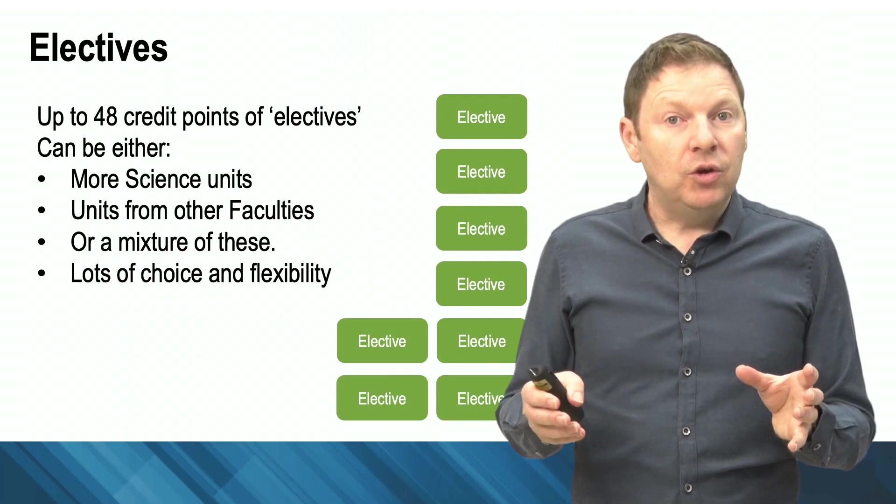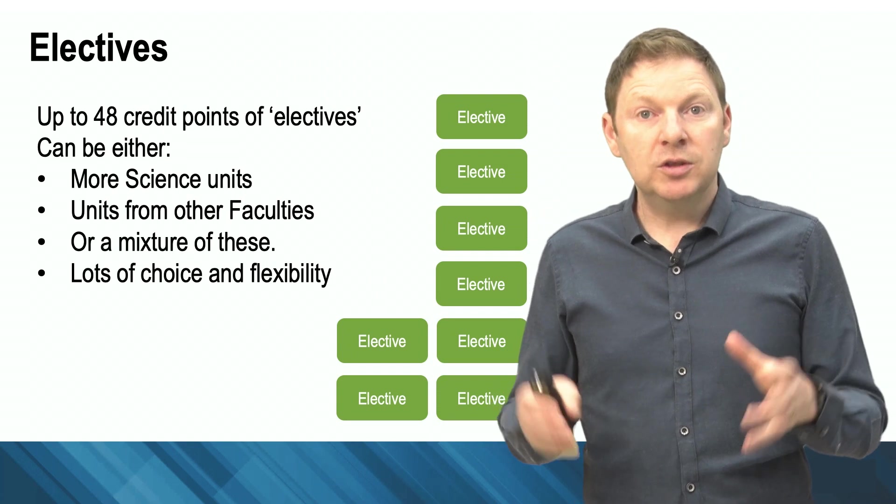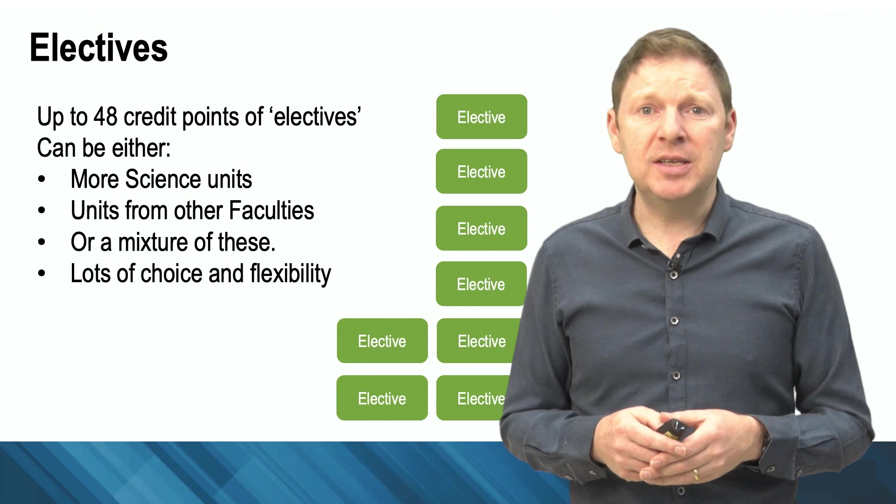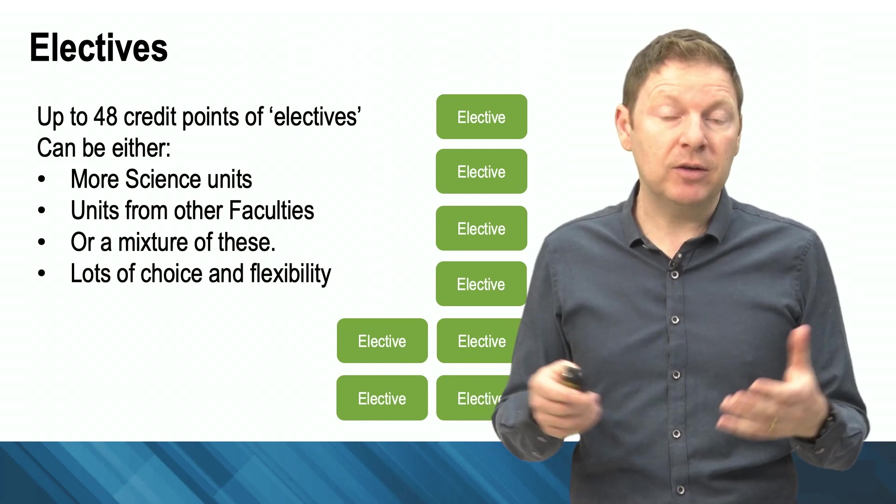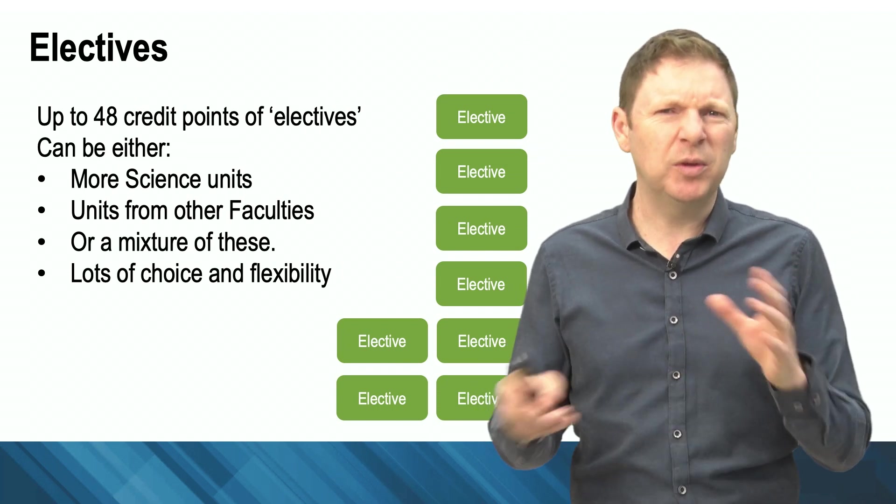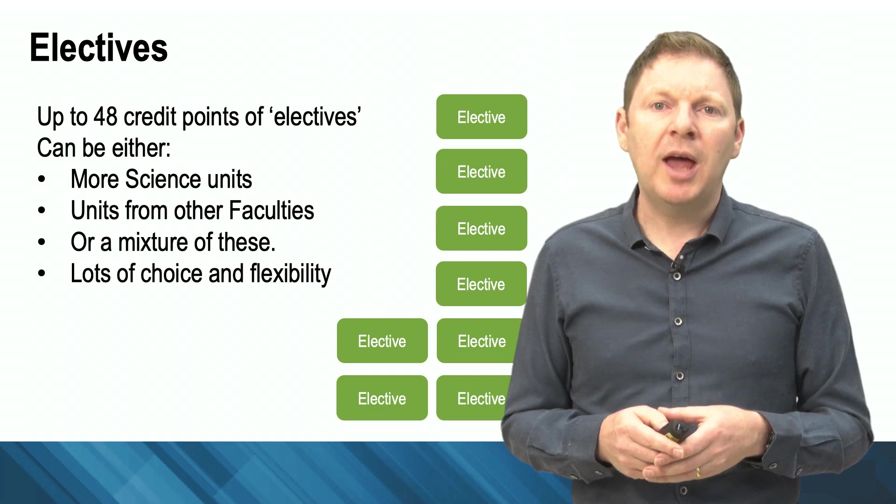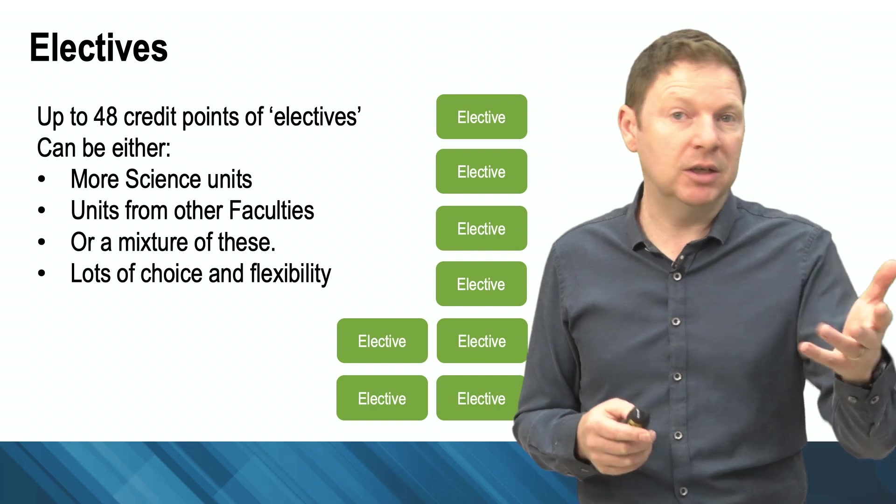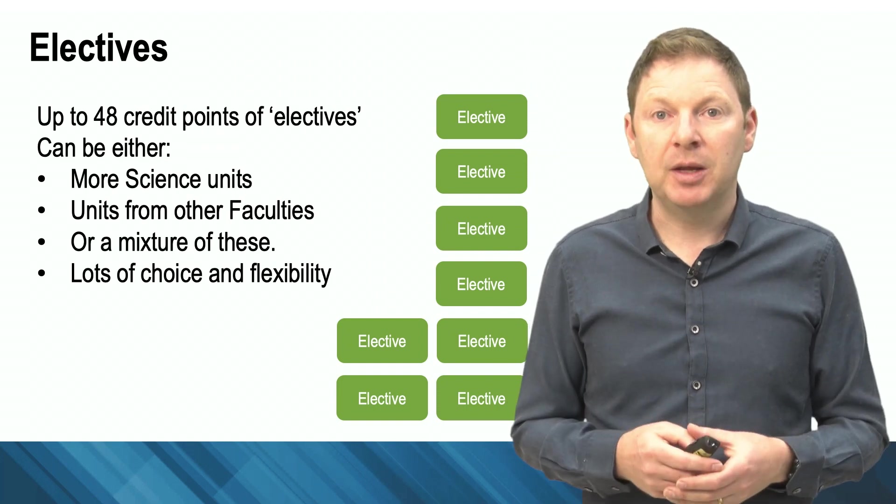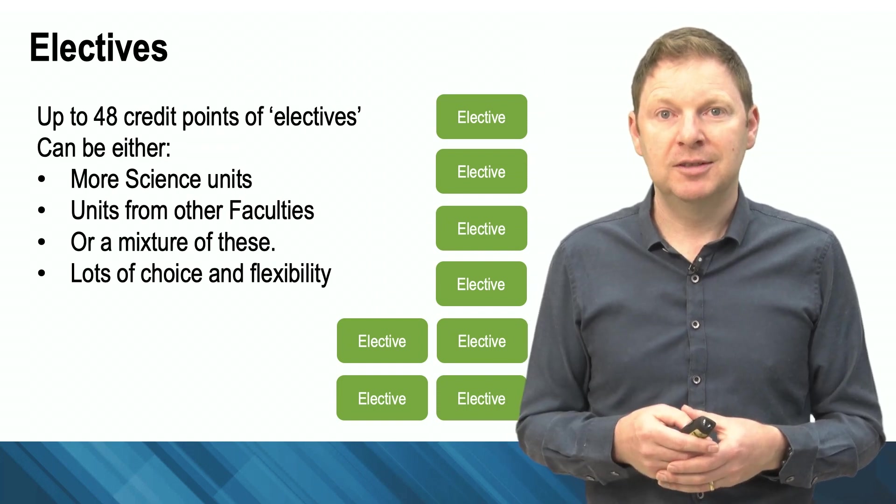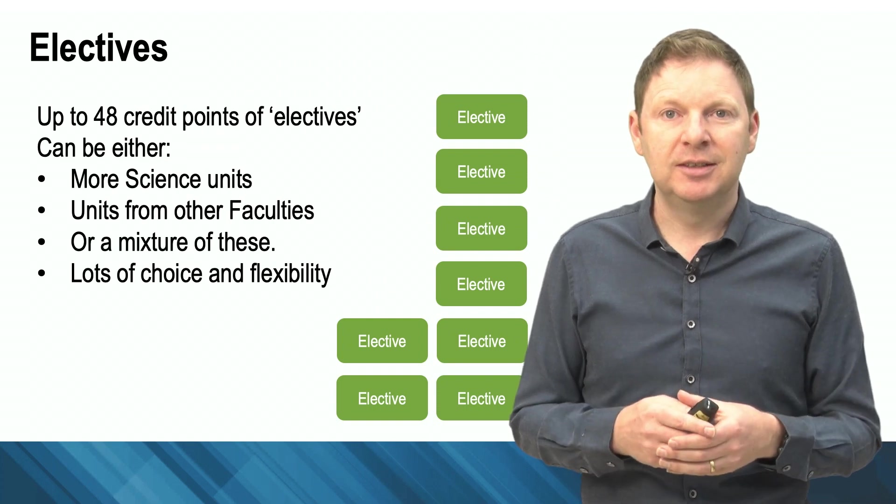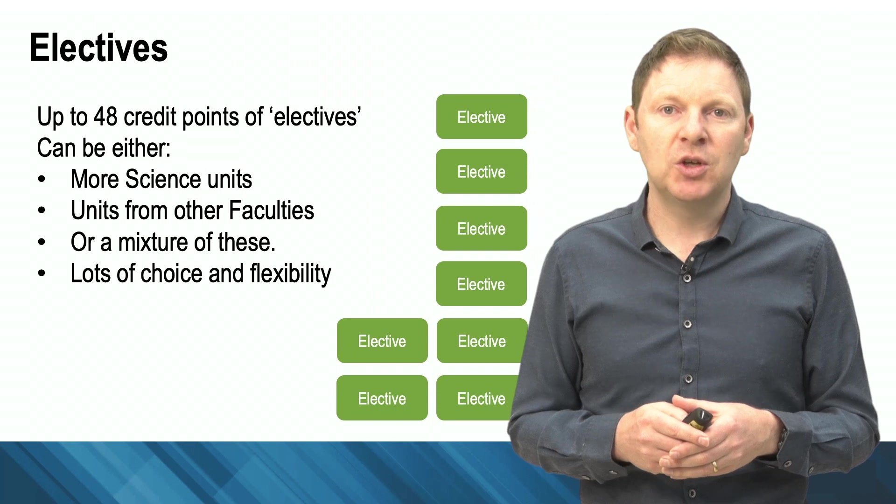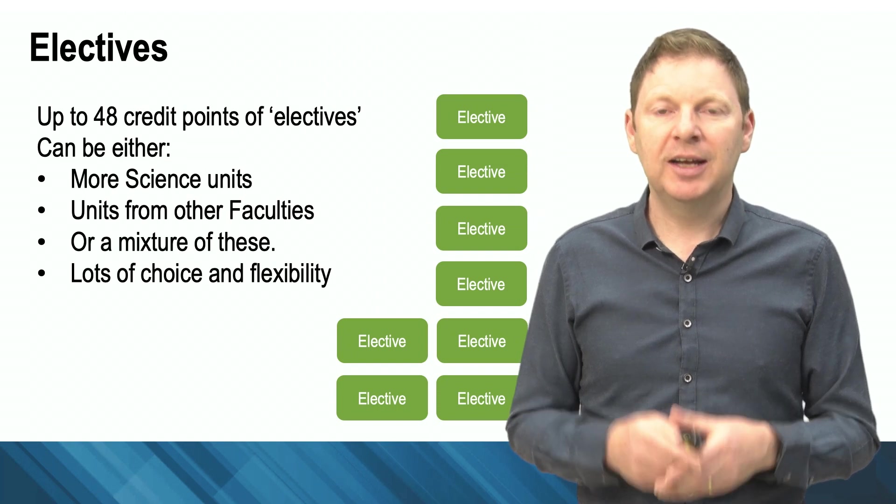So I did mention that you can also fulfill your course with a number of electives. Up to 48 credit points can be taken from units just about right across the university. There's a small number of units you can't do, but have a look again through the handbook to look at some of the options. It might be that you're interested in media, languages, marketing, commerce, some engineering on the side, art subjects. It's completely up to you. So once again, go to the handbook and have a look around.